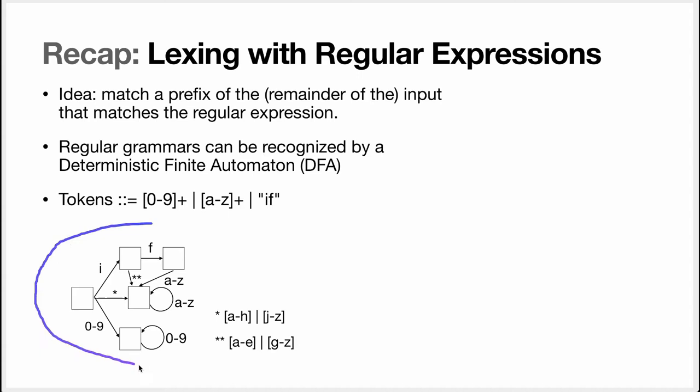Now if you compile this to a DFA you will get this and so let's get through it. So you start in this state here. If you see a digit you'll go to this state and then through this transition you will consume any additional digit. If you end up in this state that means that you matched a number.